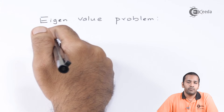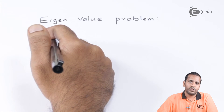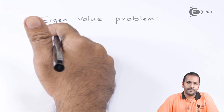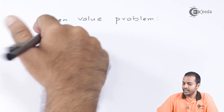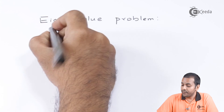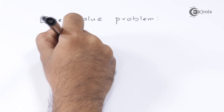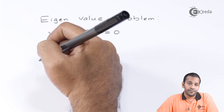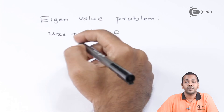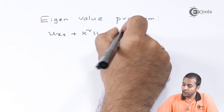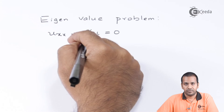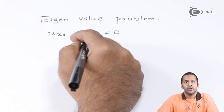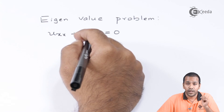Eigenvalue problems are a subset of boundary value problems — they don't have extra features but have some restrictions. Suppose we have a differential equation of the form d²u/dx² + k²u = 0. The solution of this equation will exist only for some particular values of k, not for every value of k. That value of k is called an eigenvalue.